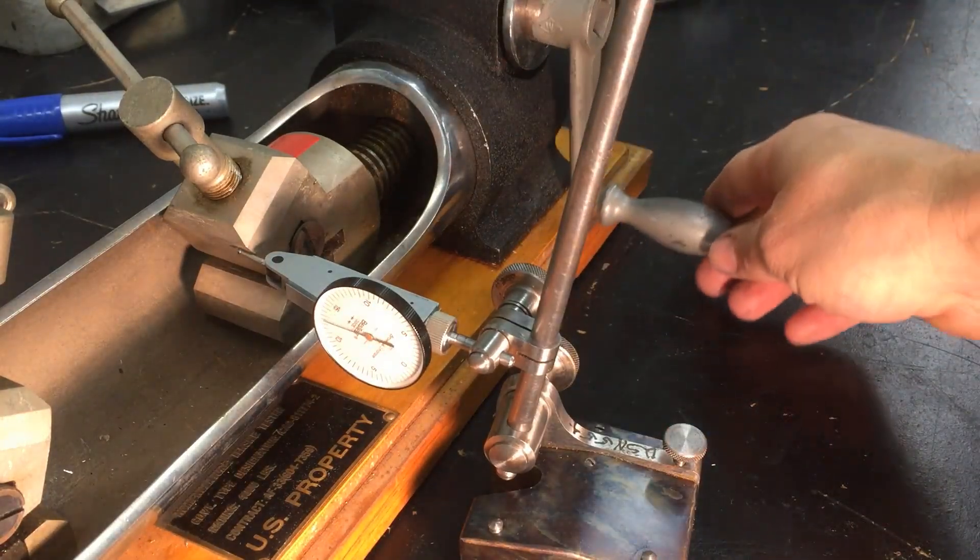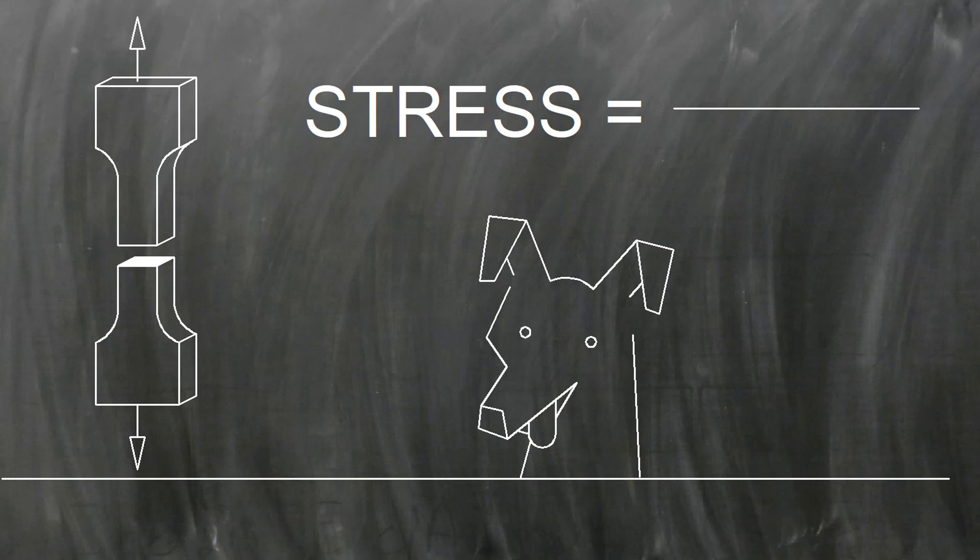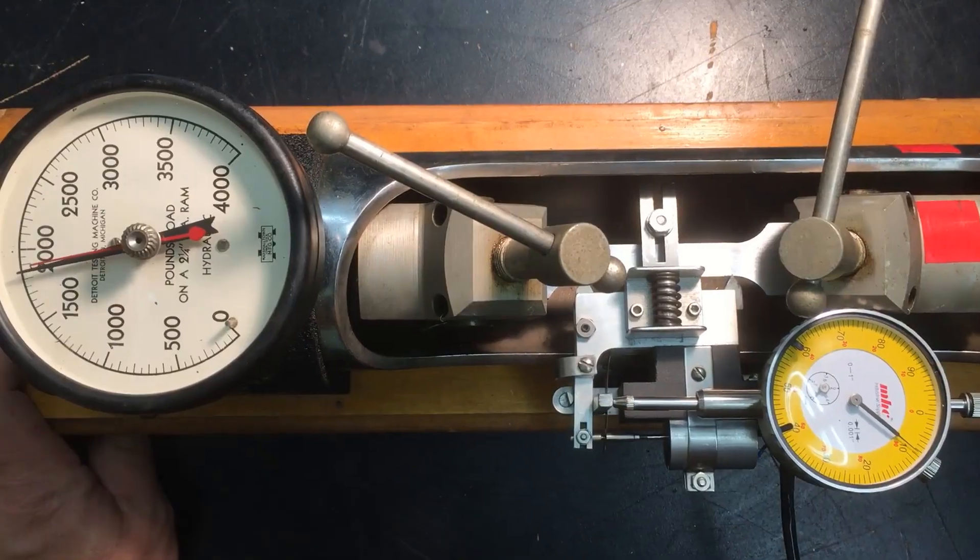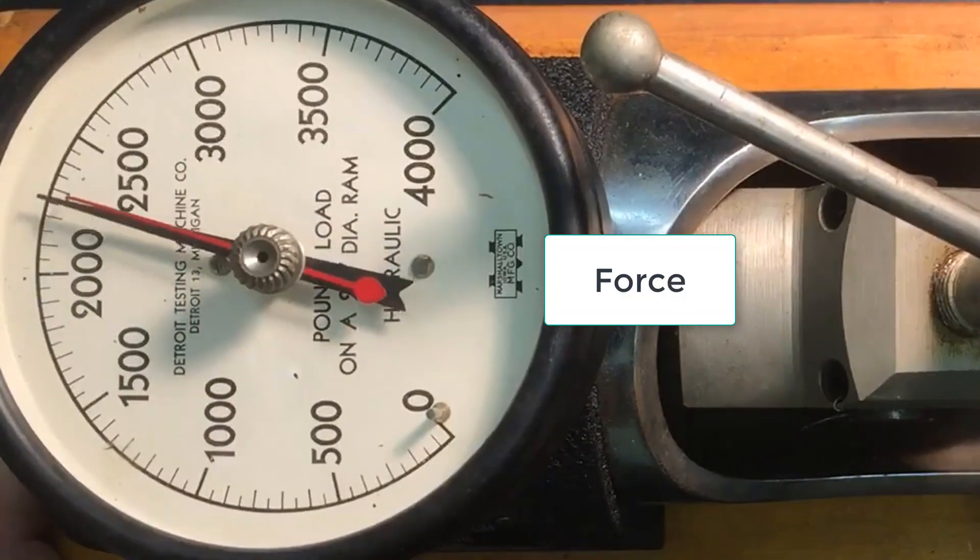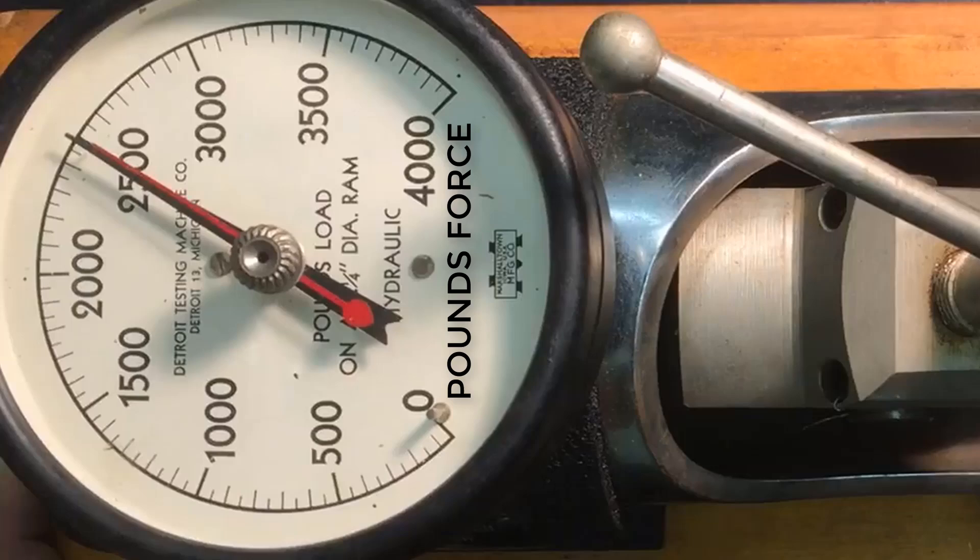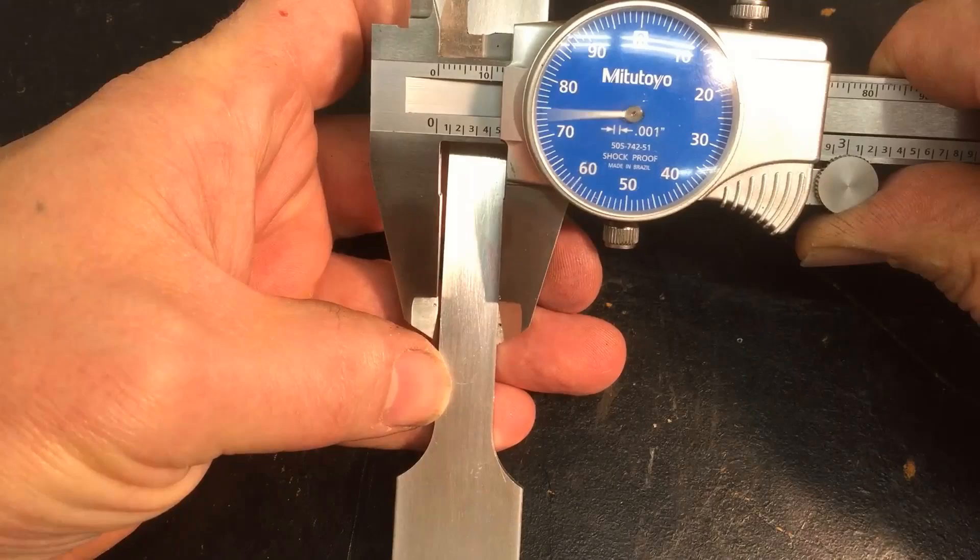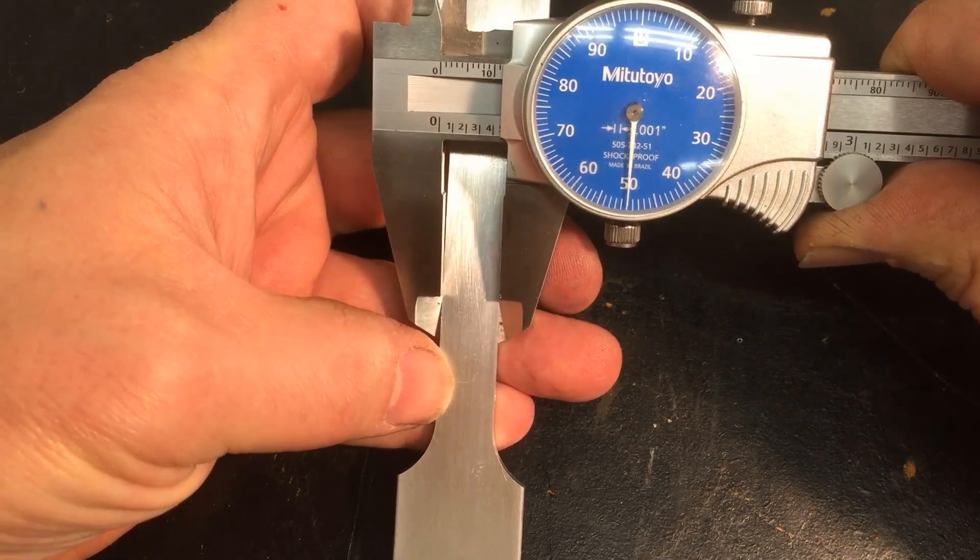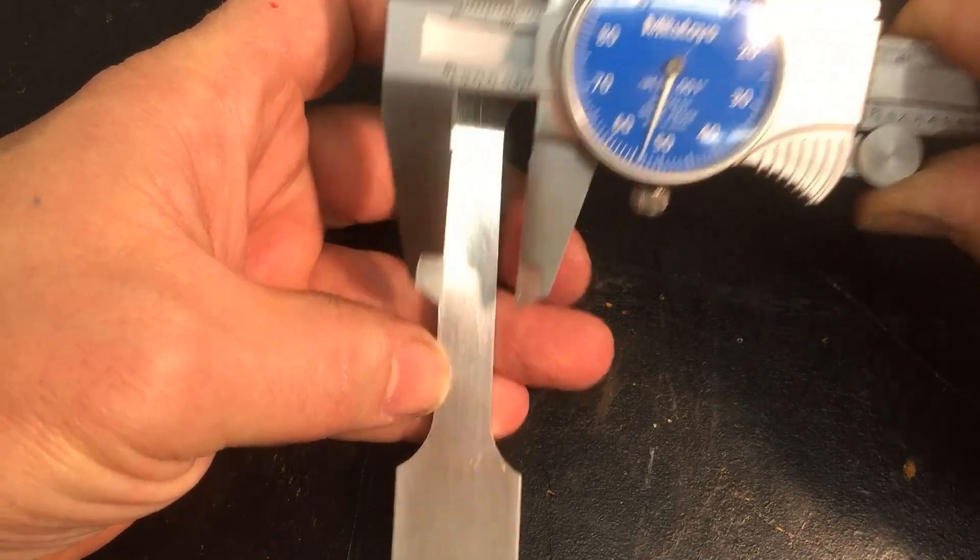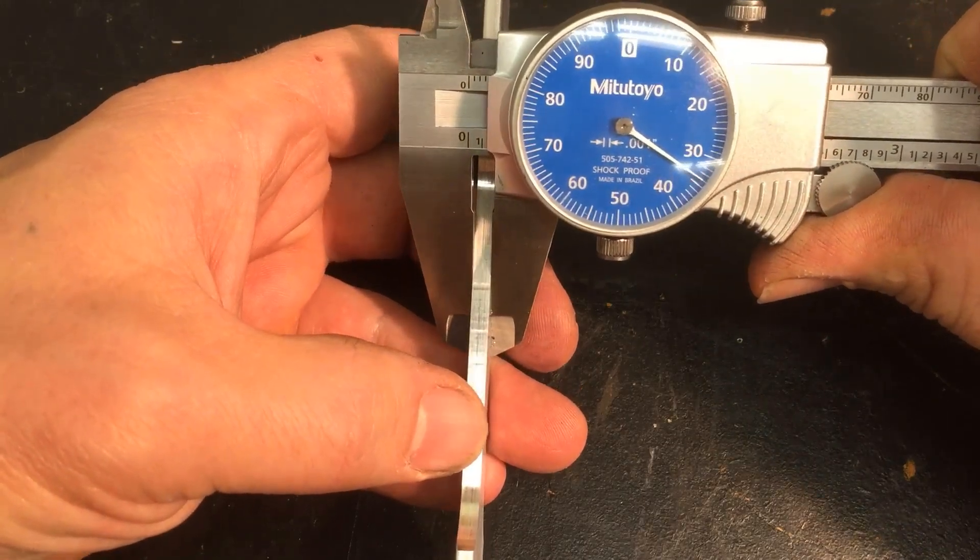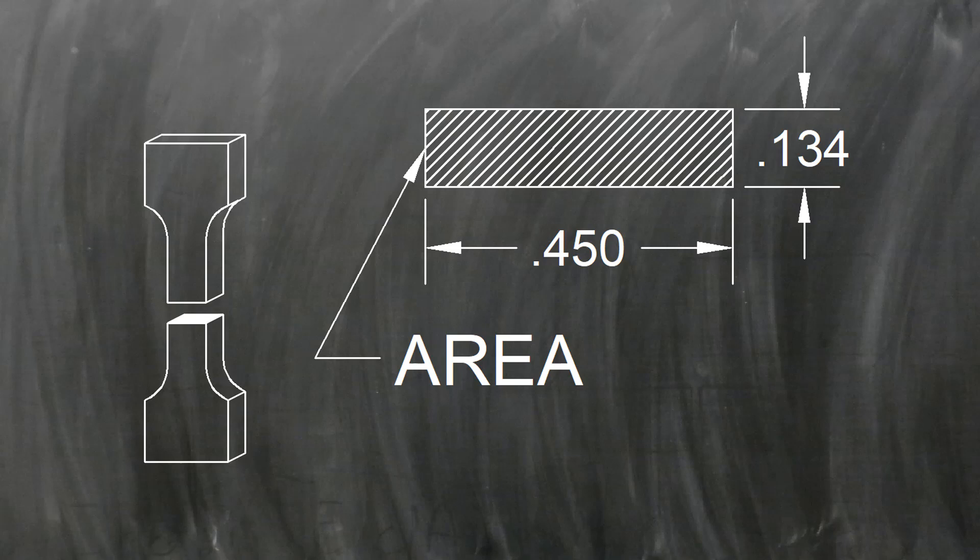When we do a tensile test we want to see how much stress builds up in our sample. Remember that stress is a force divided by a cross-sectional area. The gauge on our tester gives us values of force in pounds. To get stress values we'll divide the pounds by the cross-sectional area of the sample. The sample we're going to test is 0.450 inches wide by 0.134 inches thick. So the cross-sectional area is 0.0603 square inches.